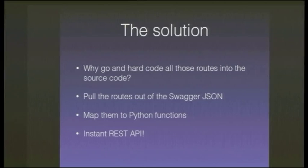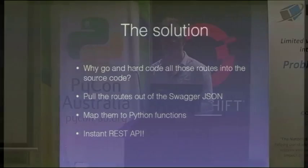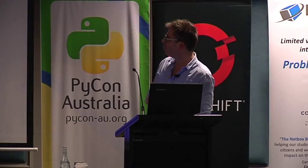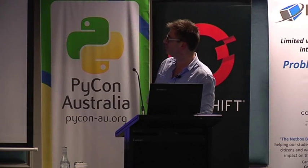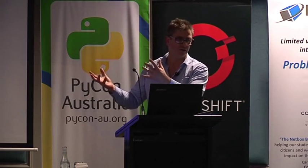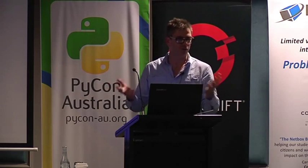Once you've written all these routes into your JSON document and spent however long doing it, digging through the source code, digging through the documentation, plugging it all into the JSON, going through that tedious process — the thing that occurred to me is, why would I go and hard-code all those routes into the source code of the application I need to build? I've already stuck them into the JSON. Don't repeat yourself — why do I need to go and write all of the routes back into the code?